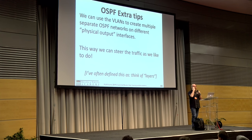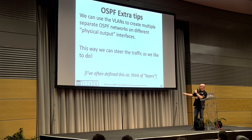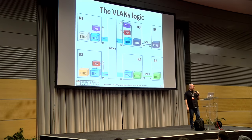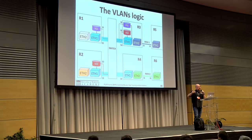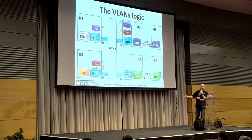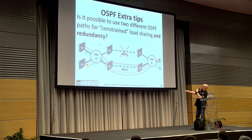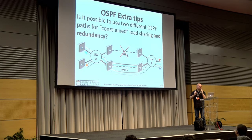Using VLANs, we can steer traffic as we like from the OSPF point of view. I often define this as thinking in layers. Taking the previous example with six routers — site A connected to routers 5 and 6, with two paths between the sites — the idea is to use VLANs to run parallel OSPF layers.